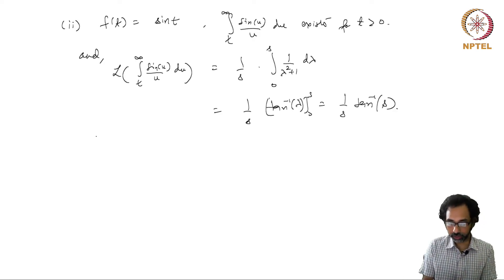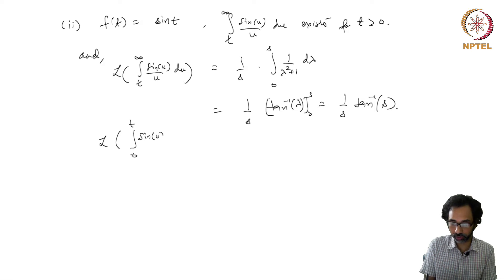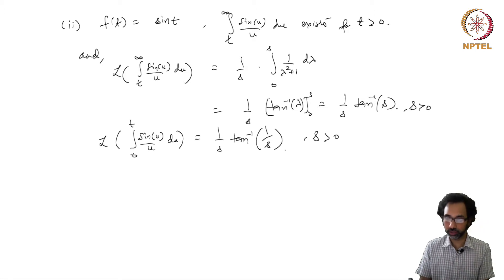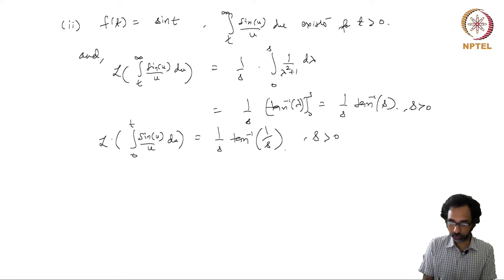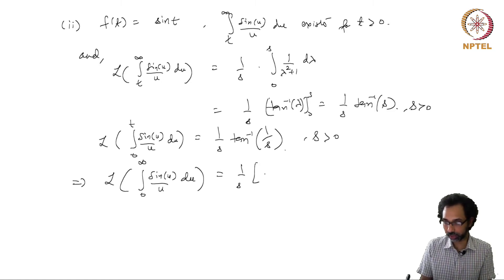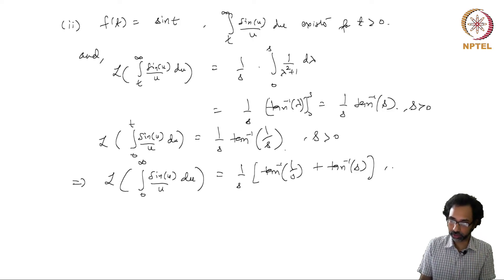We have already seen that the Laplace transform of ∫ from 0 to t of sin(u)/u du is (1/s) tan⁻¹(1/s), and this is also valid for s > 0. Now if we add these two results, this implies that the Laplace transform of ∫ from 0 to ∞ of sin(u)/u du equals the sum of these two expressions: (1/s) tan⁻¹(1/s) + tan⁻¹(s), for s > 0.